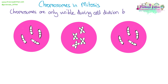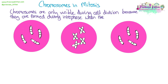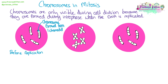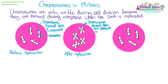Chromosomes in mitosis are only visible during cell division, because they're formed during interphase when the DNA is replicated during S phase, ready for division. Before replication, we have one chromosome formed from one chromatid, joined in the middle by a centromere. After S phase, we see that typical X-shaped chromosome — each one is a single chromosome, but it is now formed from two identical sister chromatids joined in the middle by a centromere, because the DNA has been replicated to give two identical chromatids in one chromosome.